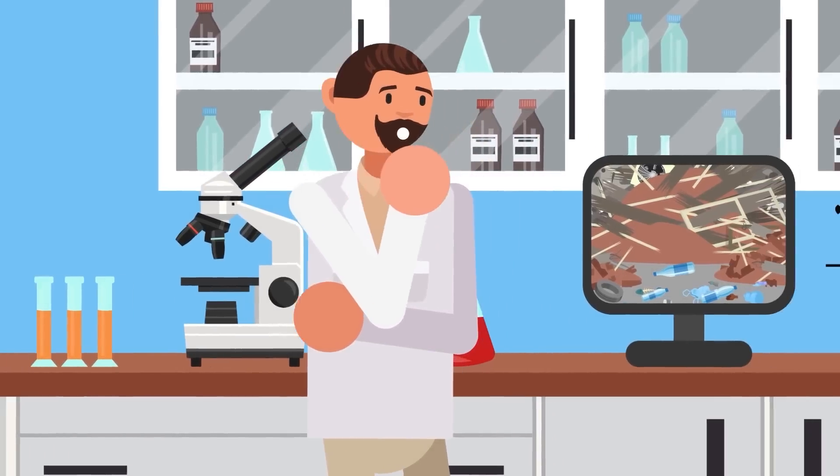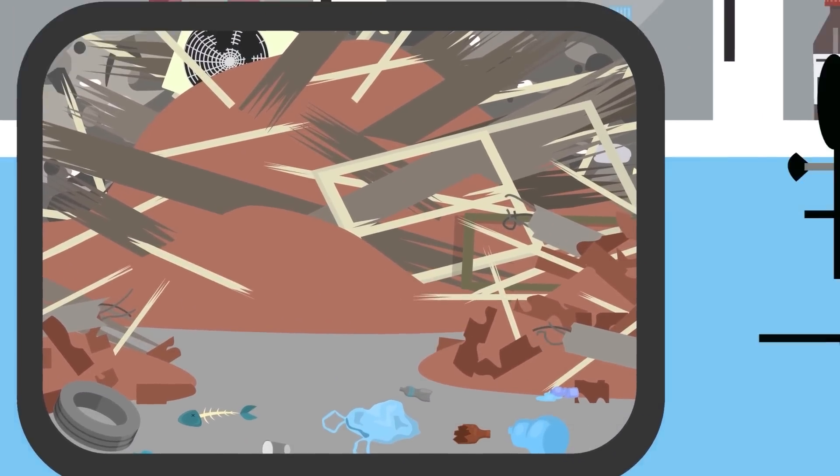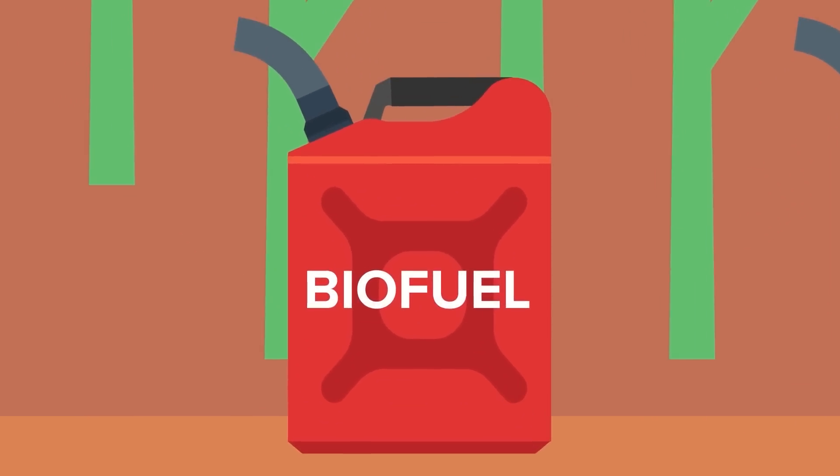For example, some biohackers are working on ways to biodegrade plastics quicker to help remove them from the environment. Others are working on a biofuel that could be made sustainably and create no pollution.